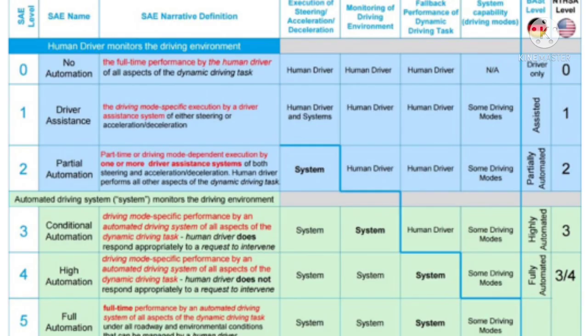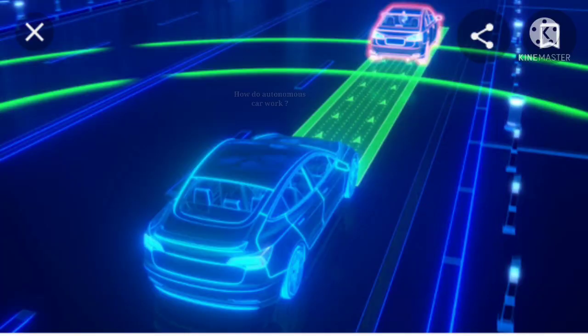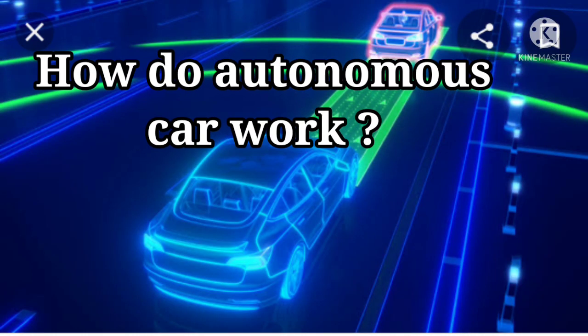Level 0: No Automation. Level 1: Driver Assistance. Level 2: Partial Automation. Level 3: Conditional Automation. Level 4: High Automation. Level 5: Full Automation. How do autonomous cars work?